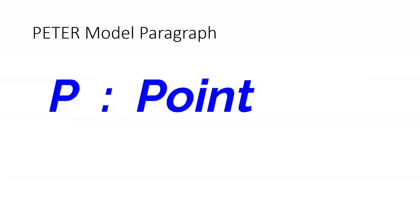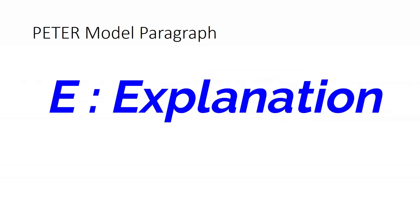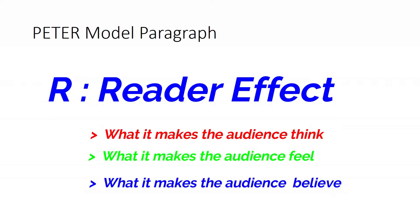PETA stands for: P — Point: what is the point of your essay? State it in the first sentence. E — Evidence: give your evidence without saying 'my evidence is.' T — Technique: your subject terminology — did the writer use a simile, a metaphor, an adjective, etc.? E — Explanation: explain the evidence linked to the question asked. And finally R — Reader Effect: what does it make the reader think, feel, or believe? Those three things — think, feel, believe — are always used to create the reader effect in that last part.